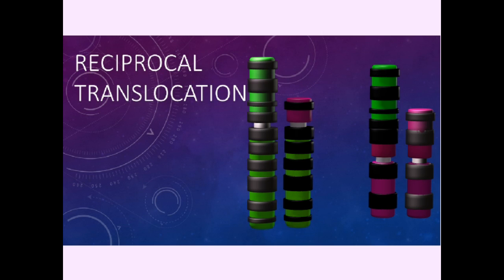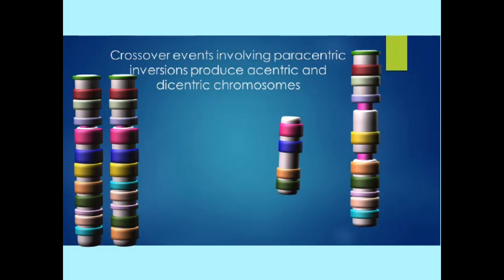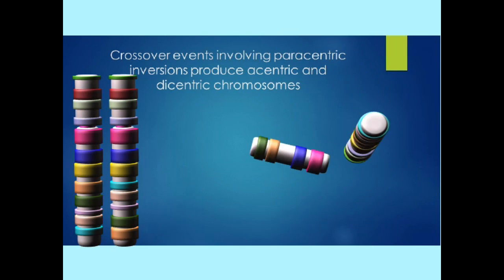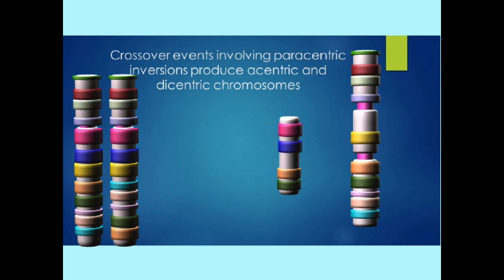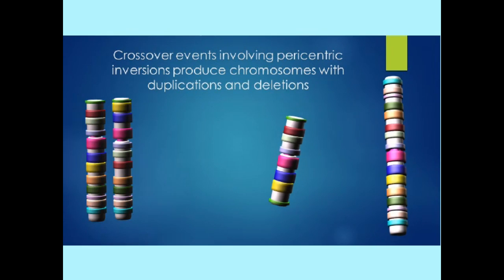And thus, more and more offspring of a hybrid individual would undergo miscarriage, or would fail to develop because they would receive duplications of some genes, deletions of other genes.